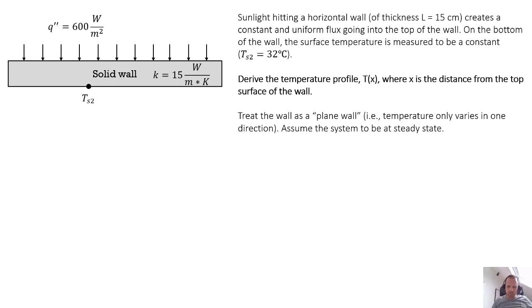Okay, here is another heat transfer example problem where we'll be solving the heat equation. This time we're going to use a different type of boundary condition. So this one says sunlight hitting a horizontal wall of thickness L equals 15 centimeters creates a constant and uniform flux going into the top of the wall.